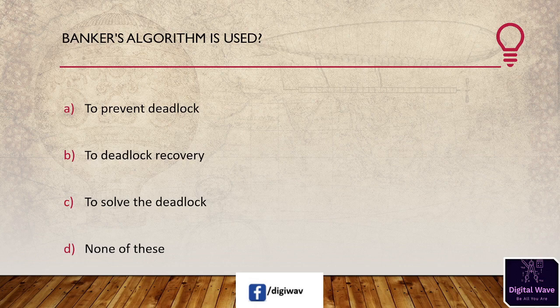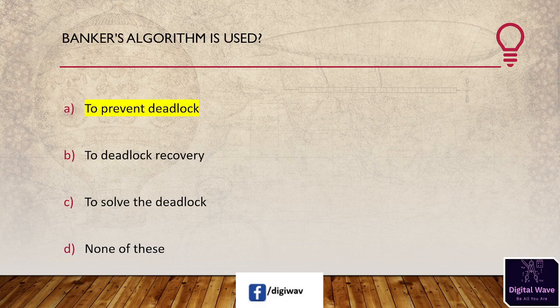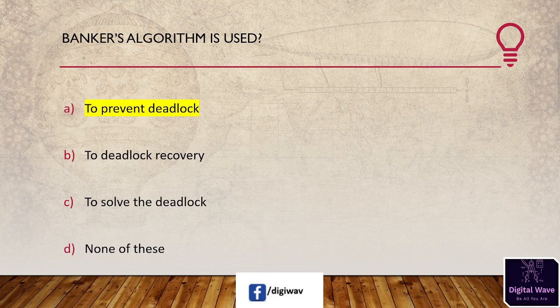Next question: the Banker's algorithm is used — first: to prevent deadlock; second: deadlock recovery; third: to solve the deadlock; last: none of these. The right answer is A, to prevent deadlock. The Banker's algorithm is sometimes called the detection algorithm. It is named so because it is used to determine whether a loan can be granted in the banking system.